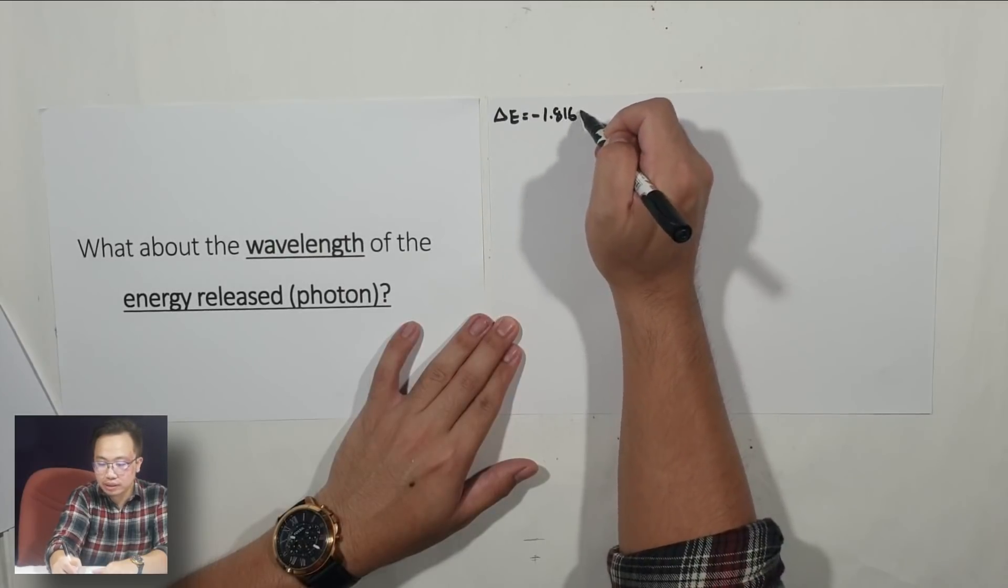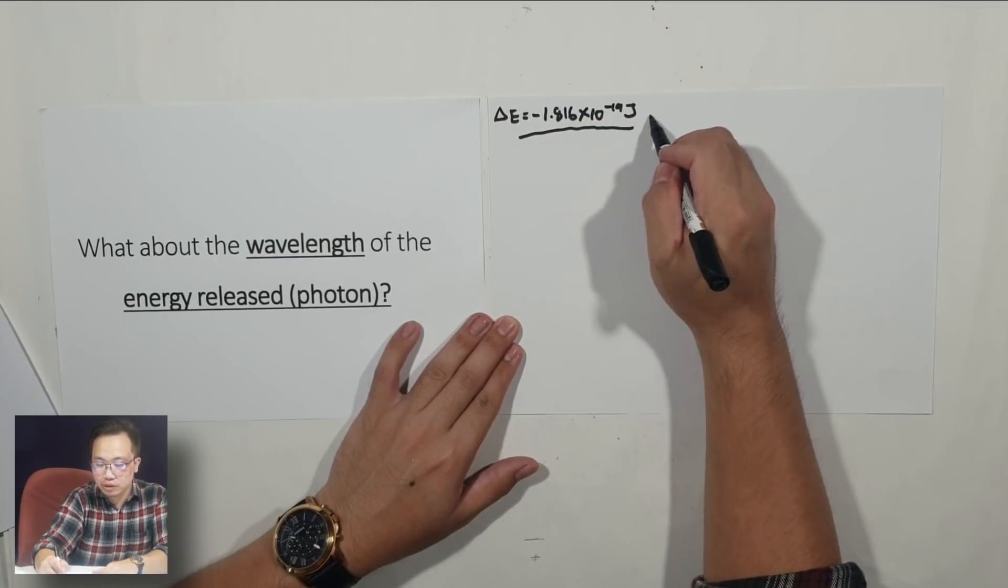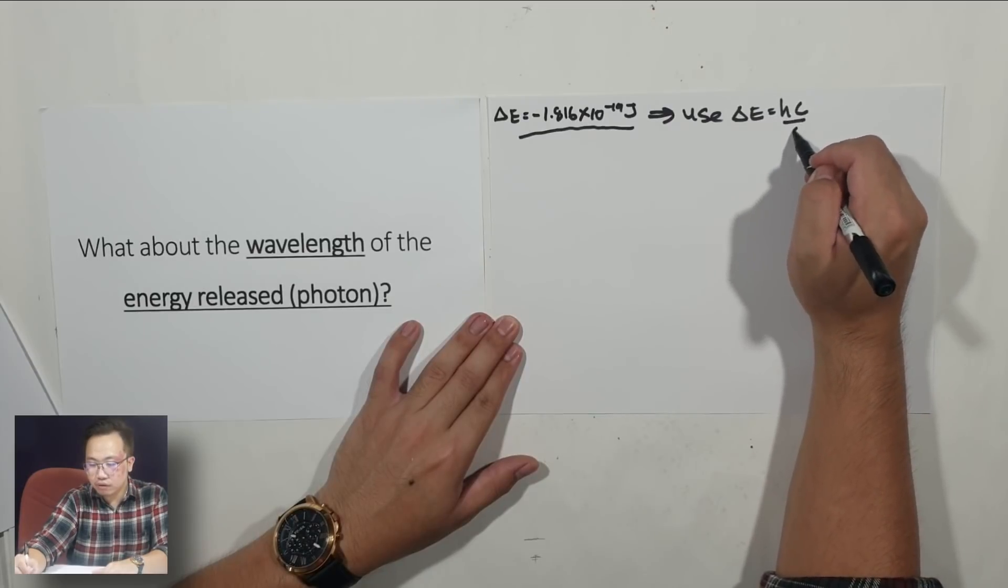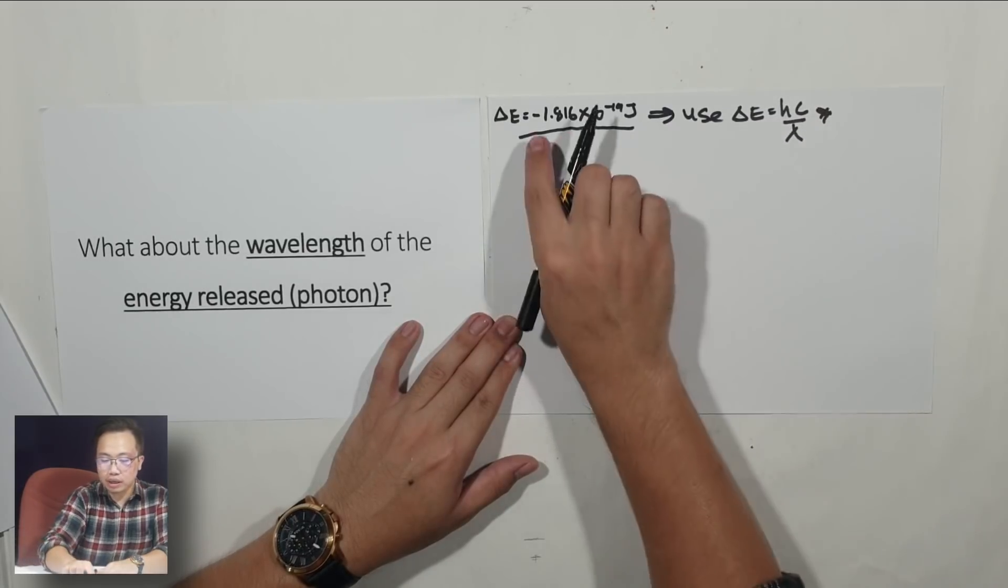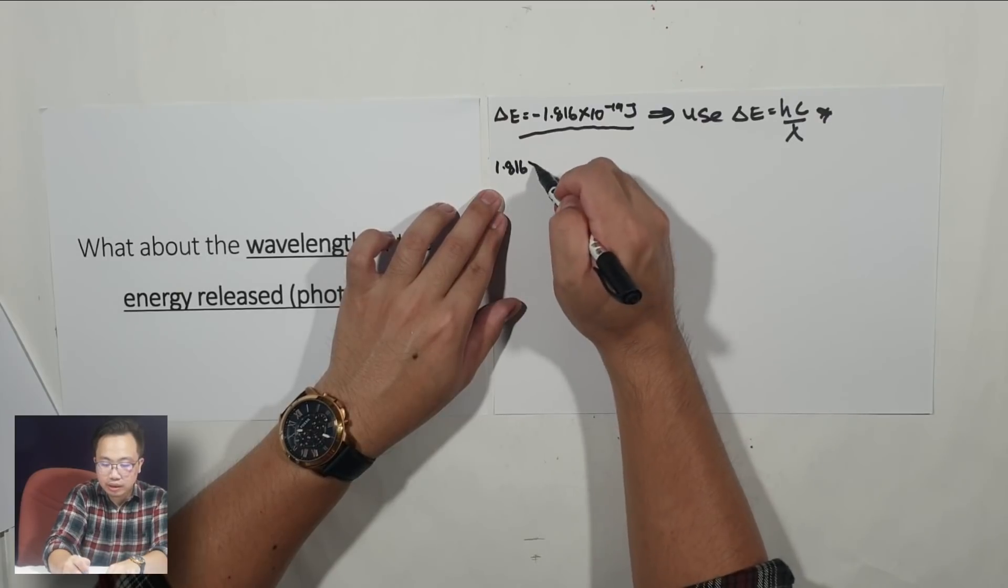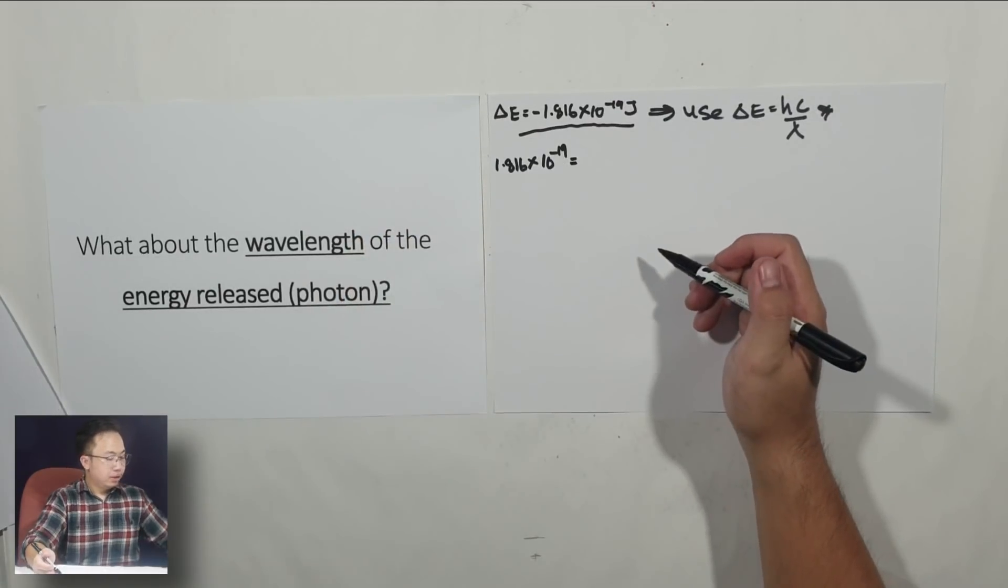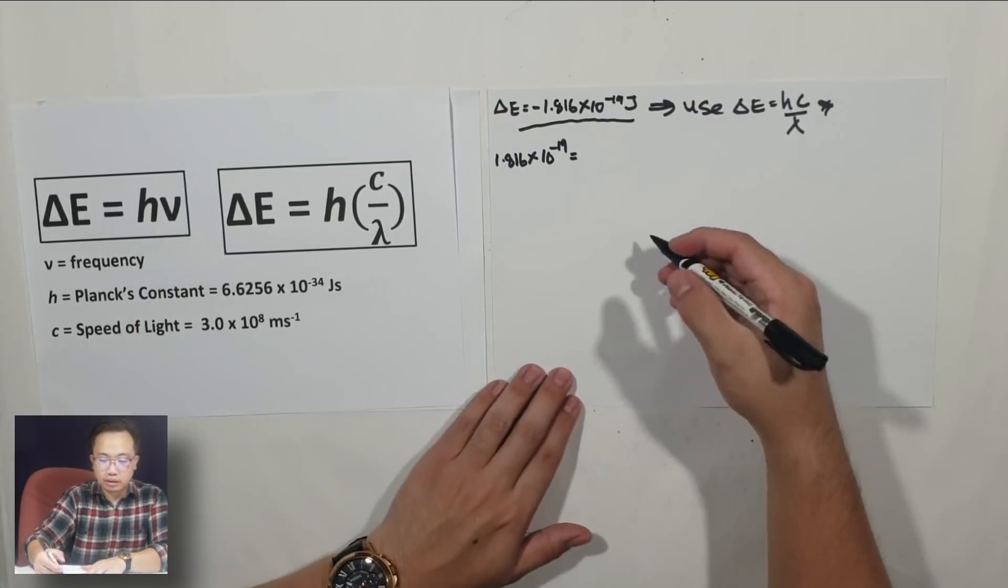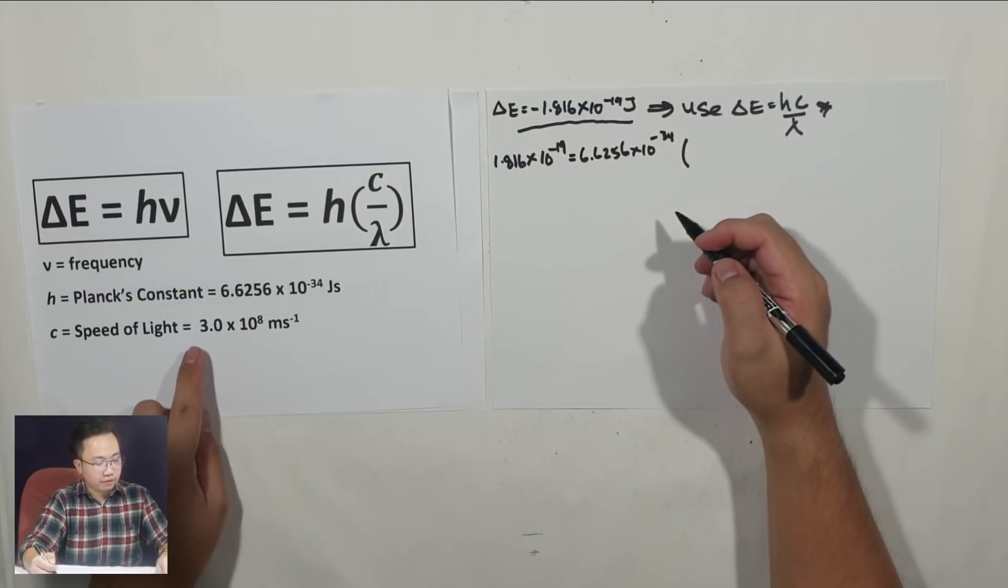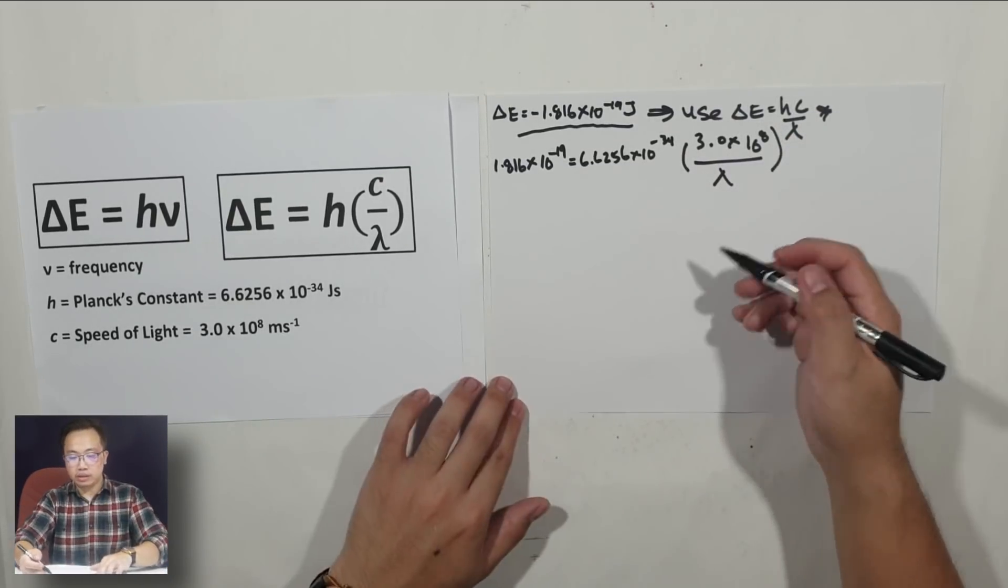1.816 times 10 to the negative 19 Joule. Because I'm going to use this formula, I'm going to ignore the negative sign. 1.816 times 10 to the negative 19 equals to. We have the Planck's constant, 6.626 times 10 to the negative 34, and then you have the speed of light over wavelength. How are we going to do this? You do it one by one. I'm going to move that to the other side.